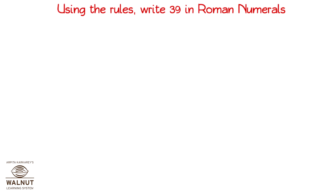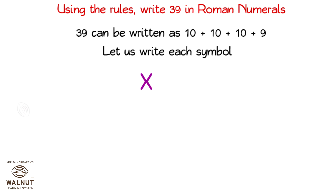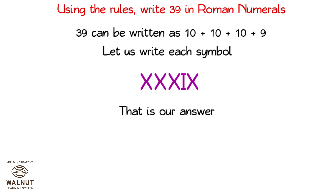Using the rules, write 39 in Roman numerals. 39 can be written as 10 plus 10 plus 10 plus 9. Let us write each symbol: X, X, X followed by I and X. That is our answer.